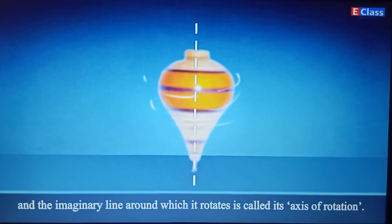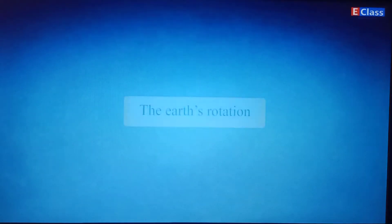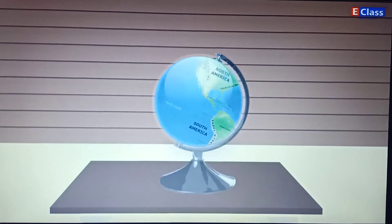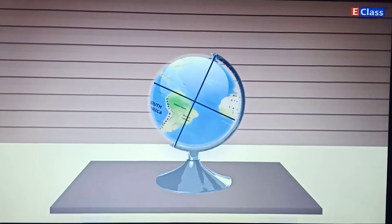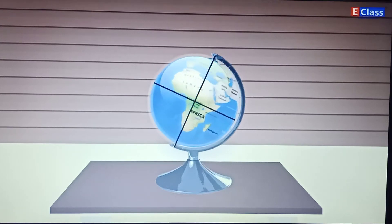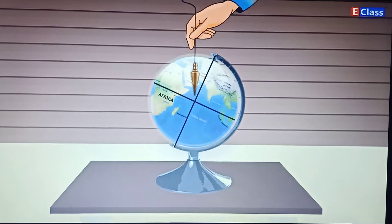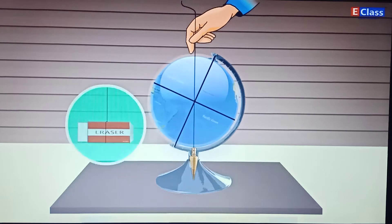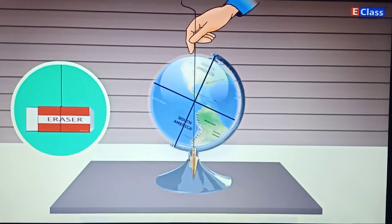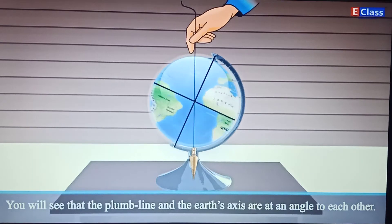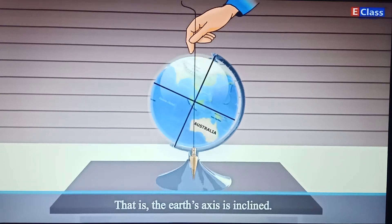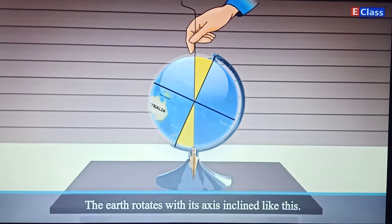The imaginary line around which an object rotates is called its axis of rotation. To observe Earth's rotation, take a globe and spin it. Note the line around which it rotates. Now take a plumb line and hold it close to the globe. If you cannot get a plumb line, tie a long thread to an eraser to make one. You will see that the plumb line and the Earth's axis are at an angle to each other — that is, the Earth's axis is inclined.